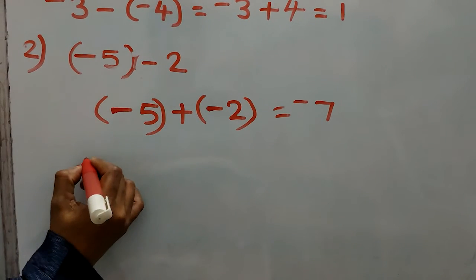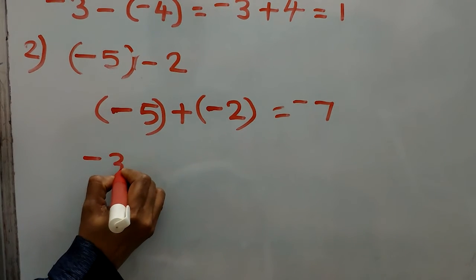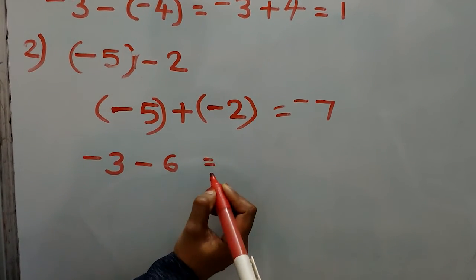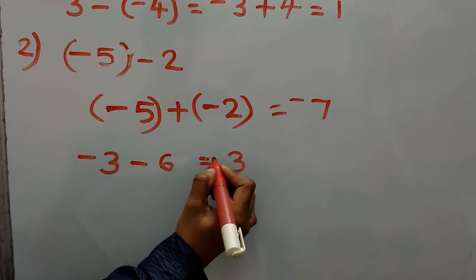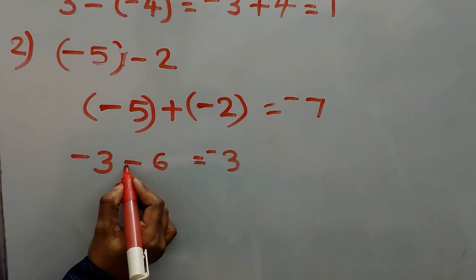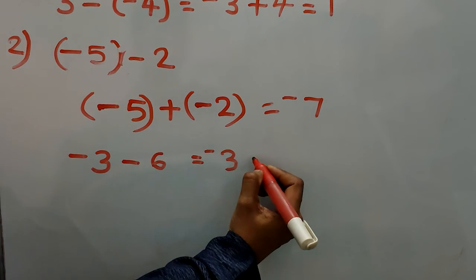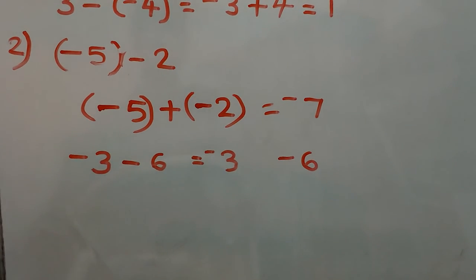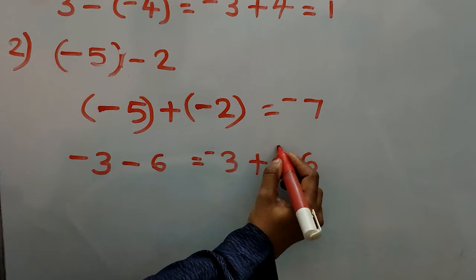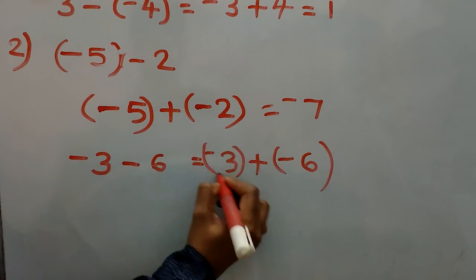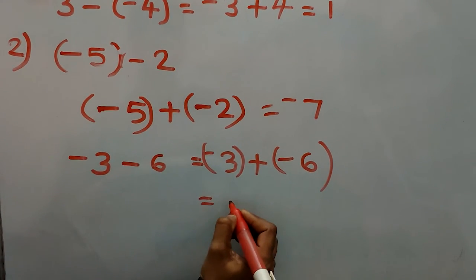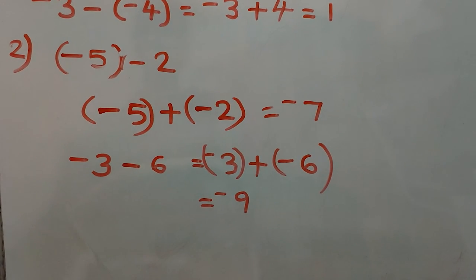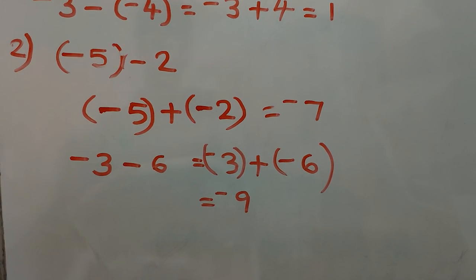One more example: negative 3 minus 6. First number is negative 3, and we give the subtraction sign to 6, so second number will be negative 6. In between, addition sign. Both are negative: add and put the negative sign. 6 plus 3 is 9, both are negative, so answer is negative. Thank you.